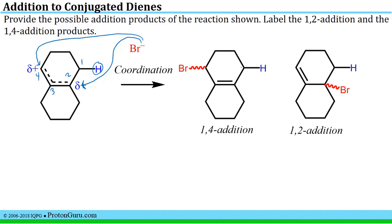If you do coordination to carbon number 4, you will have the 1,4 addition product. The squiggly line indicates that the bromine could be pointed towards us or away from us — that's a chiral center — so you get a racemic mixture of the two 1,4 addition products. If you have coordination to carbon number 2, you would have the bromide again with the squiggly line off that chiral center, and that's the 1,2 addition product.